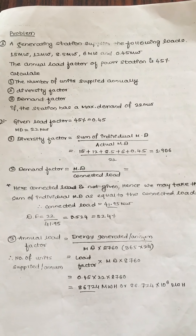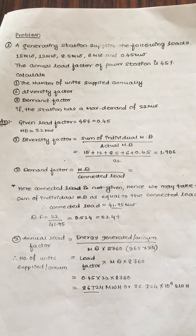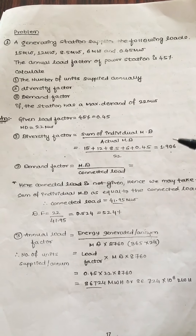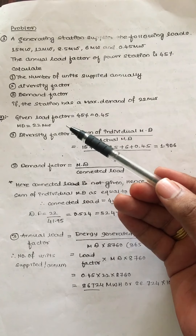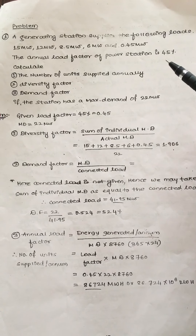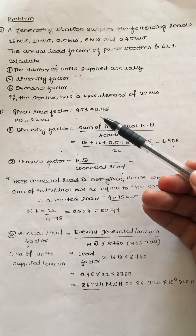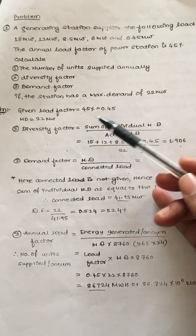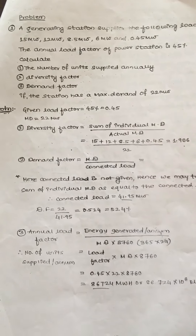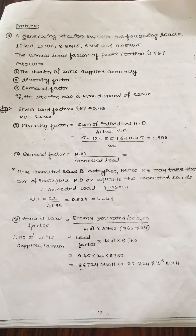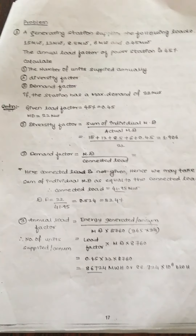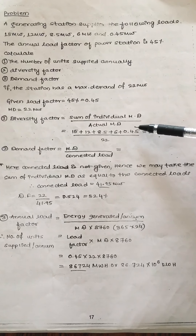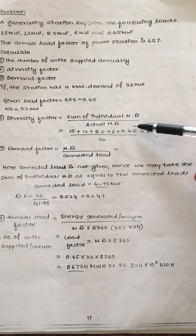We have to calculate the units supplied annually, the diversity factor, and the demand factor. The given data: load factor is 45 percent, or 0.45, and the maximum demand is 22 megawatt. First, let us find out the diversity factor. Diversity factor is given as the sum of individual maximum demands divided by the actual maximum demand.